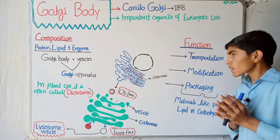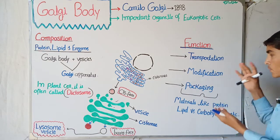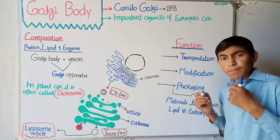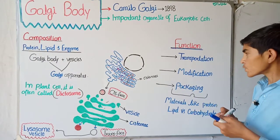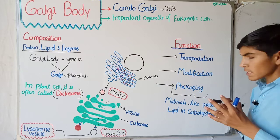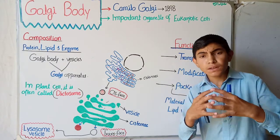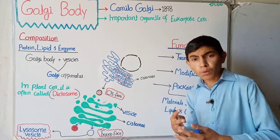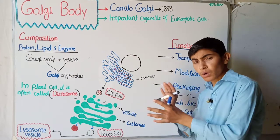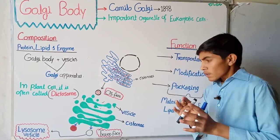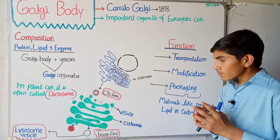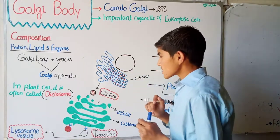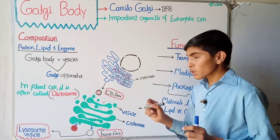Now let's discuss the functions of the Golgi body. The Golgi body may perform three functions: transportation, modification, and packaging. Transportation means the carrying or moving of some material from one place to another. How does it occur?